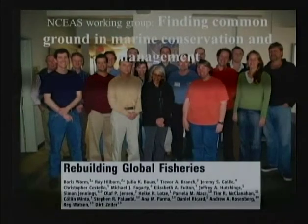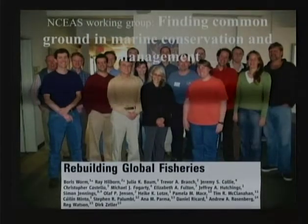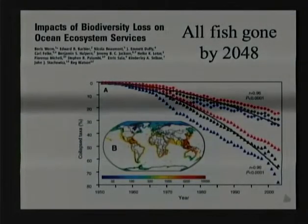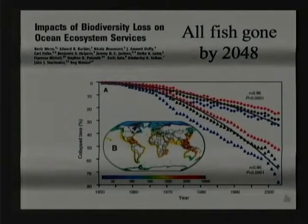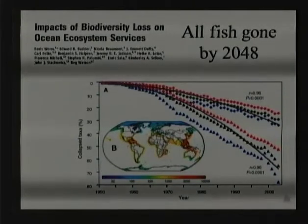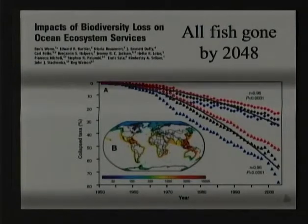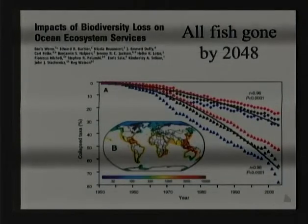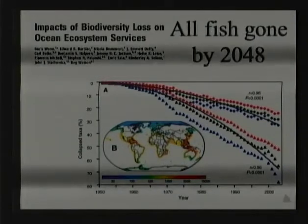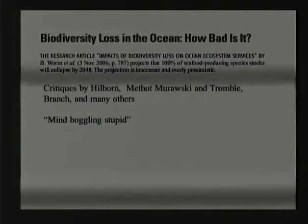This is the group involved in resolving uncertainty about the status of fisheries — are they all collapsing or not? It began with a paper published in 2006 that forecast all fish stocks would be collapsed by 2048. It made the front page of the New York Times, Washington Post, and the L.A. Times. It was so contrary to the experience of many of us who work in marine fisheries that we wrote very snarky replies to the journal Science. Mine was that this was mind-bogglingly stupid.